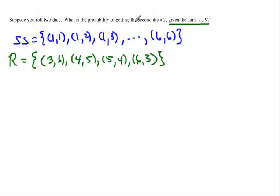Now we can actually find the probability of getting a second die of 2. So out of this sample space what would be the ways of getting a second die of 2? Well notice in this restricted sample space there are no second dice of 2. We have a 3, a 4, a 5, and a 6.